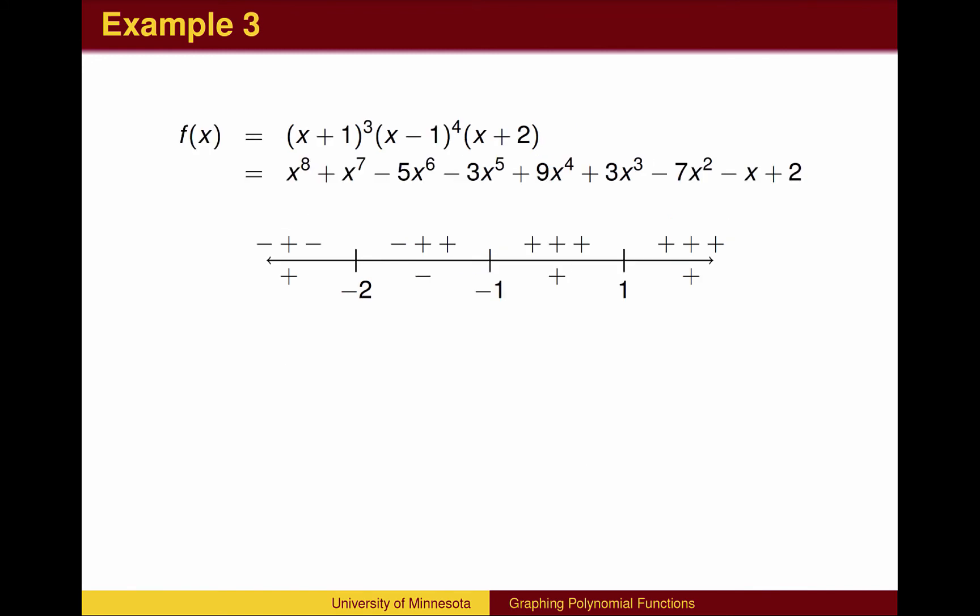Here is a third example. The x-intercepts are at -2, -1, and 1. To the right, all the factors are positive. As we move to the left of 1, the factor x - 1 changes sign. Since it is raised to the fourth power, it adds four negatives. Any even amount of negative signs will cancel and remain positive.